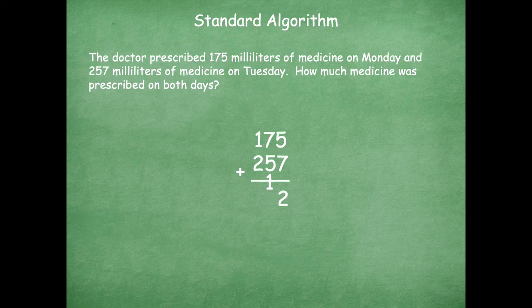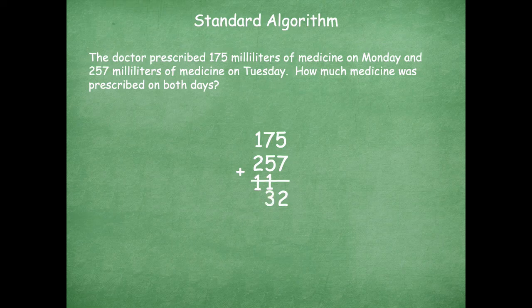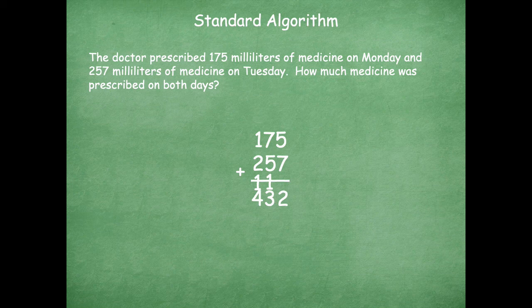Then I move to my tens place, which is seven tens plus five tens plus one ten, which gives me a total of 13. So I have 100 and three tens is the same. 13 tens is the same as 100 and three tens. Now I'm going to go to my hundreds place and add that column, which gives me a total of four.